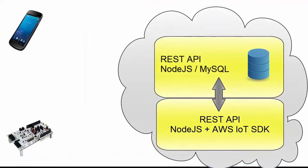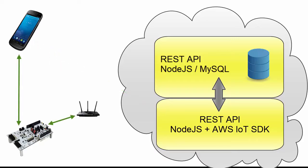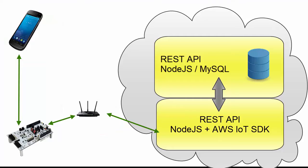The first part of the app grabs the certificates from AWS IoT. The second part of the app talks to the board. At this point the board is connected to both the access point — the router — and the phone. This is a Gainspan patent. After everything is complete, the board no longer needs to talk to the app.